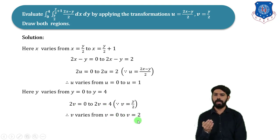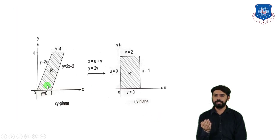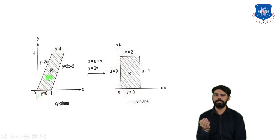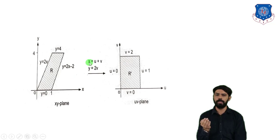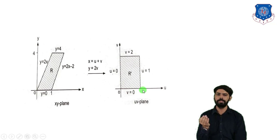We will now plot the graph from these limits. In the xy-plane, the graph of y = 2x and y = 2x − 2 are shown, along with y = 0 and y = 4, forming region R. Using the transformation x = u + v and y = 2v, this region is converted to the uv-plane with lines u = 0, u = 1, v = 0, and v = 2.